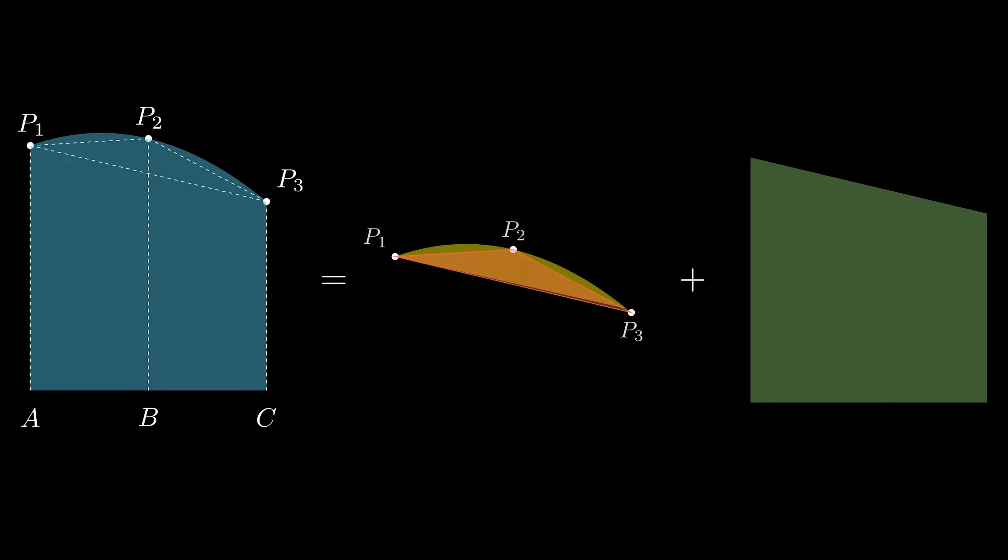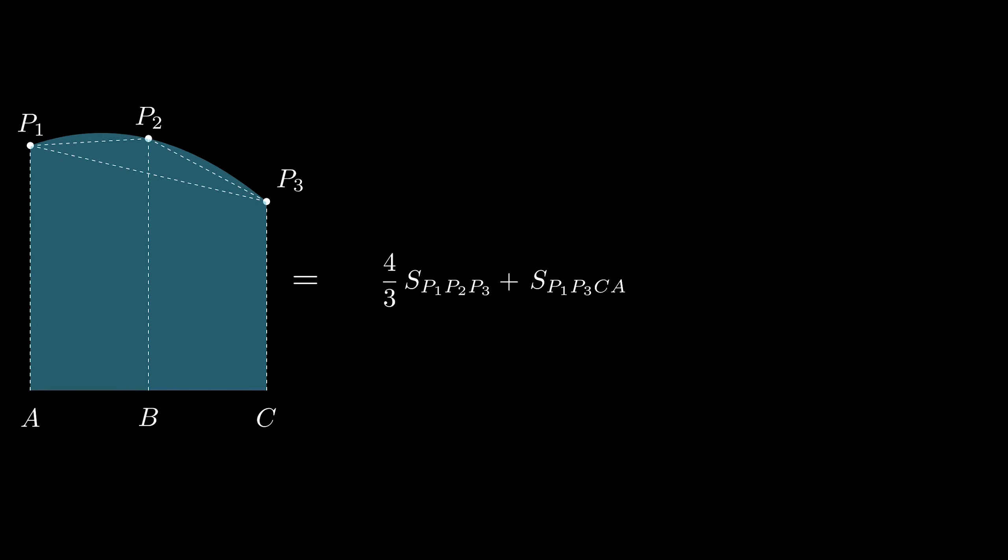From the previous video about Archimedes quadrature formula, it can be inferred that the area of this parabolic segment is 4 thirds of the triangle formed by joining the three points. If you haven't paused the video yet, do consider taking a look. To avoid confusion, let me give notations to these areas.